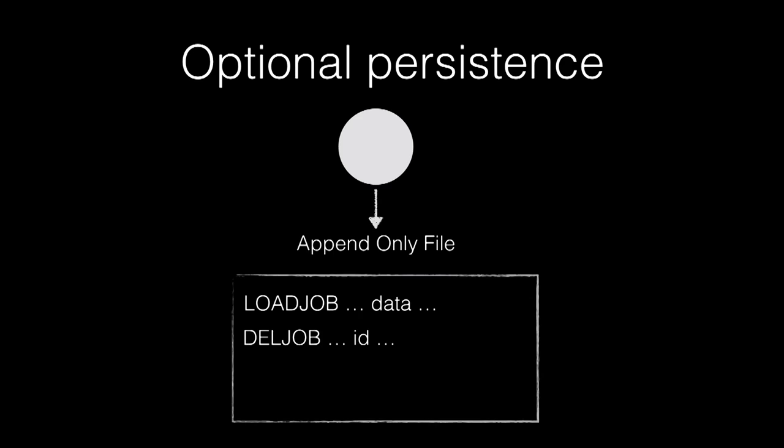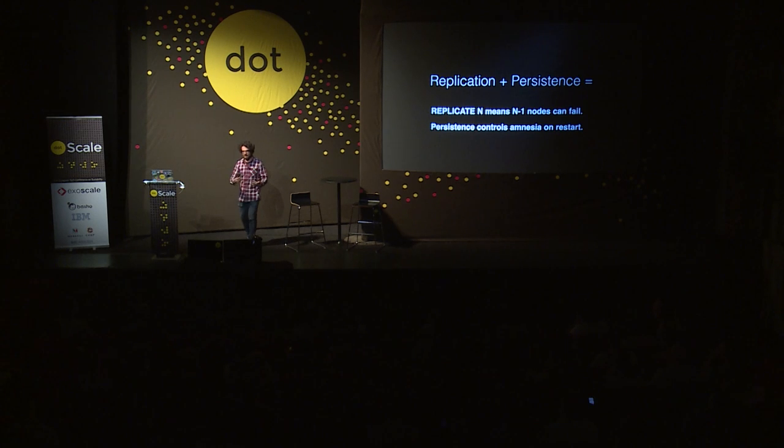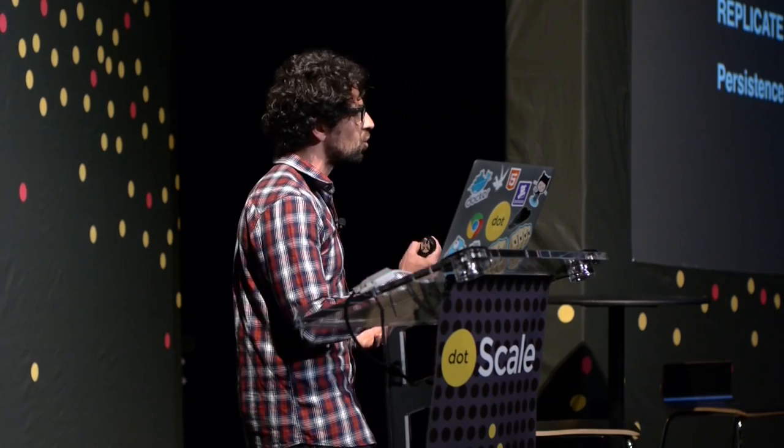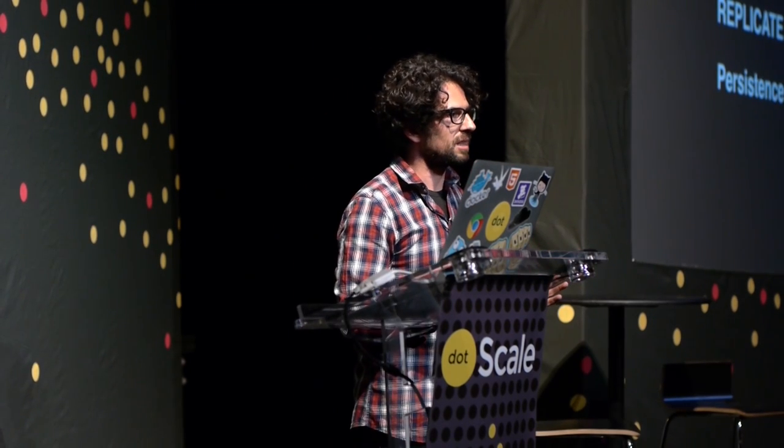There is also optional persistence. Disque can be configured to be completely ephemeral, so nodes keep messages only in memory with nothing on disk. Or, like Redis, you can enable an append-only file so every message received gets logged on disk, with different fsync policies like in Redis. Replication is the cluster's effort to retain messages so that in the face of N-1 failures there is still one copy in the cluster. Persistence is a single node's effort to retain a message — will it survive a crash and recovery? Different fsync policies give different levels of durability.